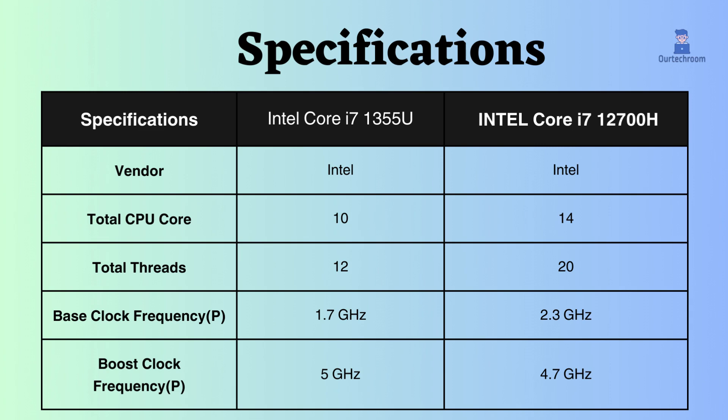The base clock frequency of the Intel Core i7-12700H is greater than the Intel Core i7-1355U, so the Core i7-12700H performs better when the CPU is under load.